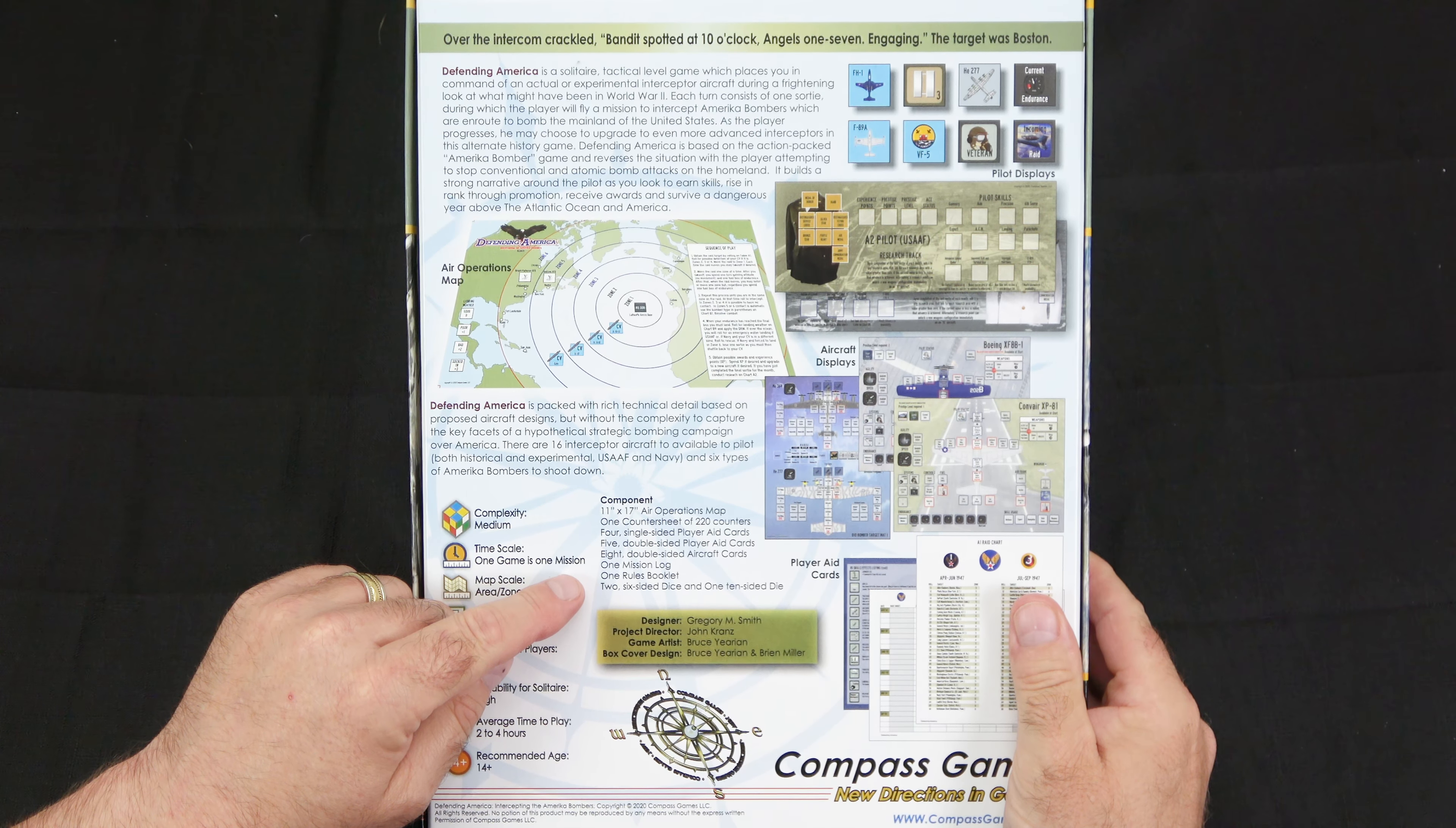These will come out in a strip, and then you just separate them that way. But you have your different aircraft, different bombers, all the different admin counters that you'll need to keep track of all the different statuses, your pilot, and the attacks going on throughout the game.